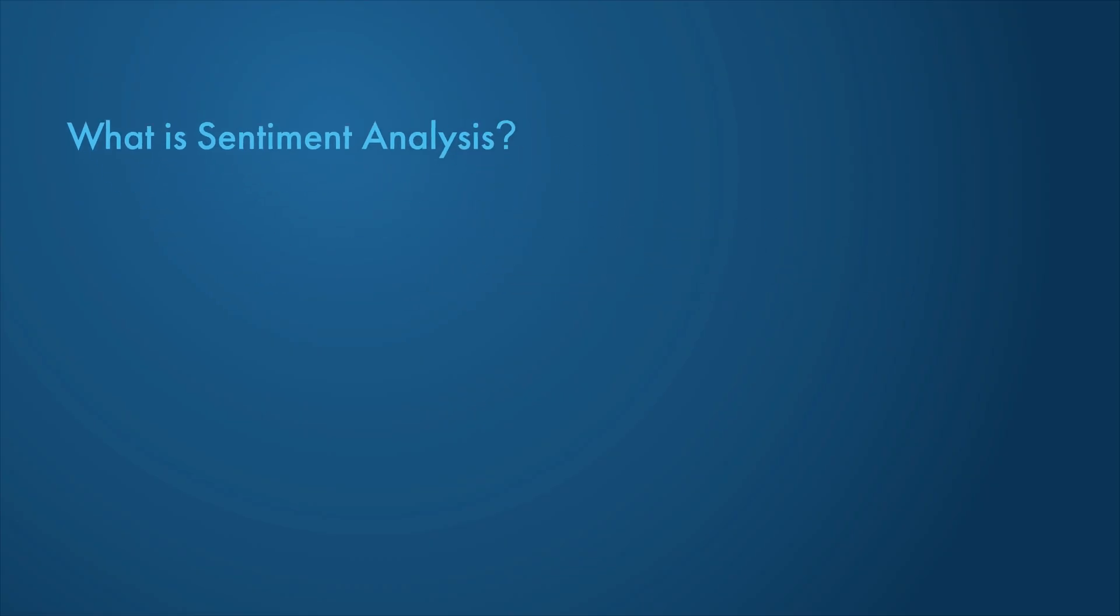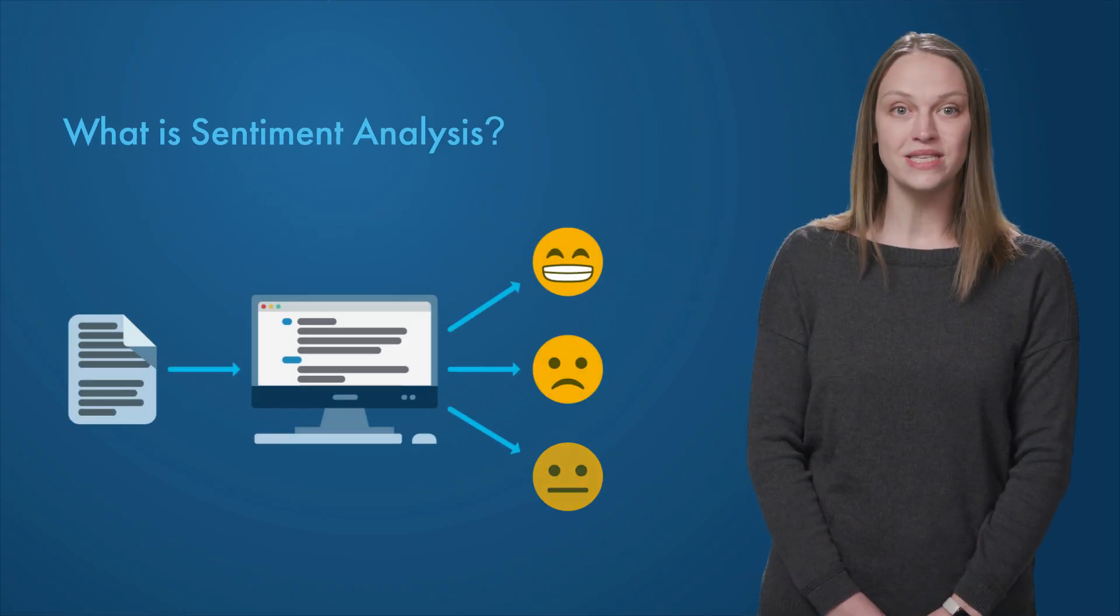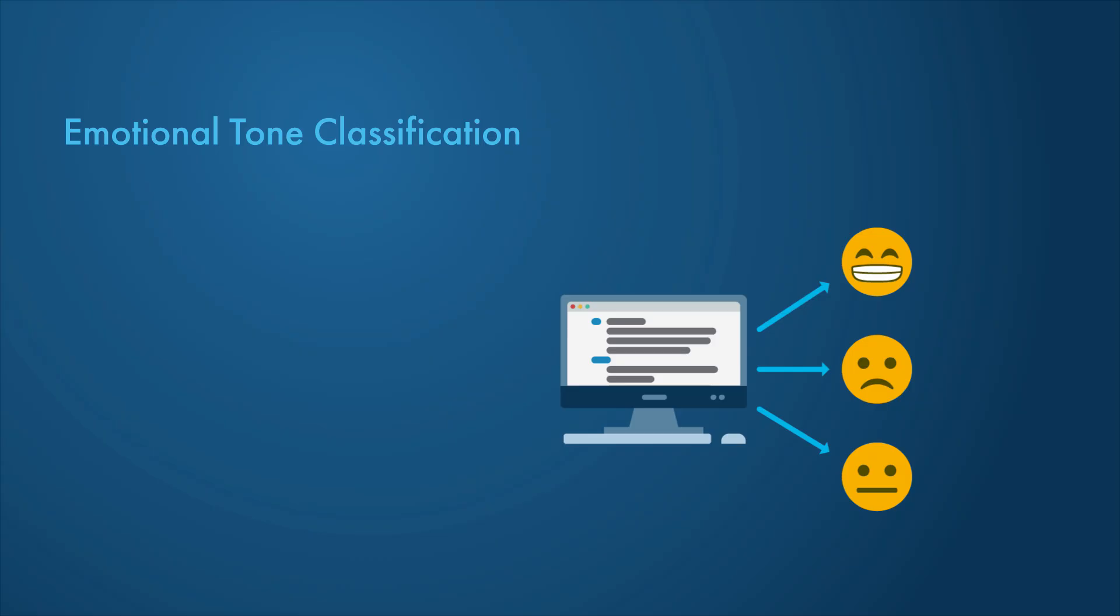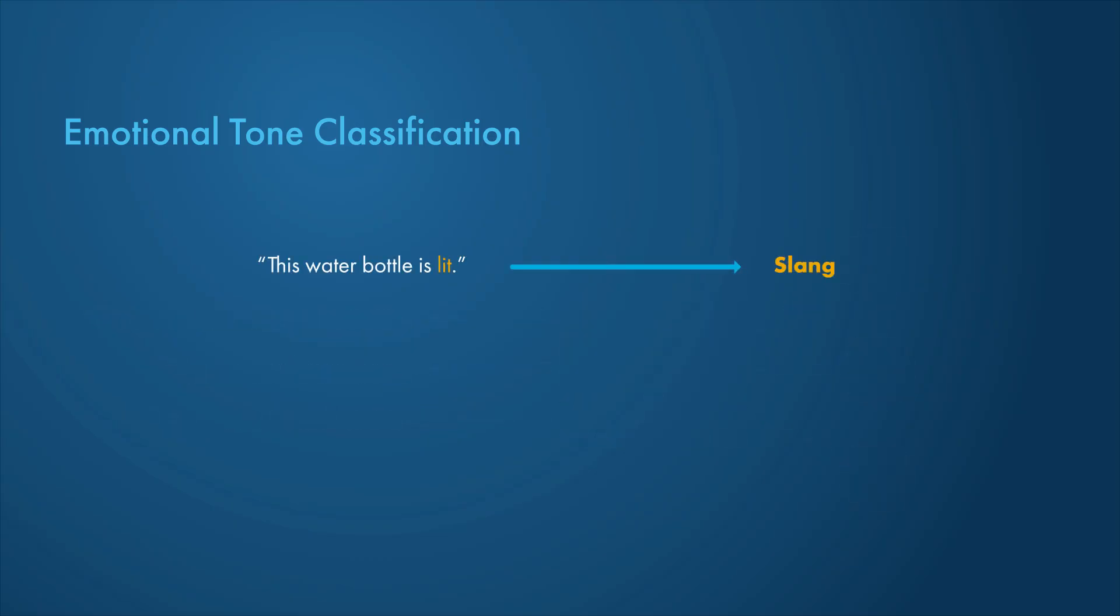Sentiment analysis deals with the classification of opinions or emotions in text. You can classify the emotional tone of the text as positive, negative, or neutral. The tone is not always so easy to classify, especially when the text contains slang or sarcasm or the context changes the tone.